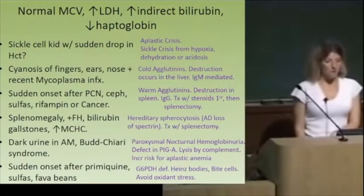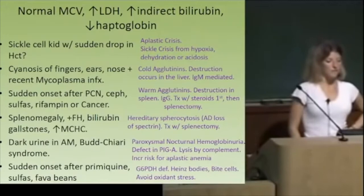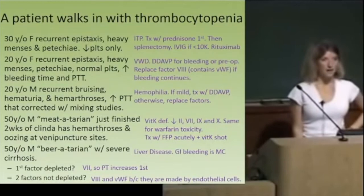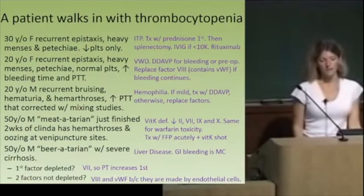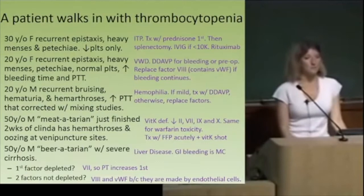With thrombocytopenia — low platelets on CBC — if it's a young woman with recurrent epistaxis, heavy menstrual bleeding, and petechiae, and on the CBC workup the only thing that's low are the platelets, that's ITP. Prednisone is medical management; splenectomy if that doesn't work.